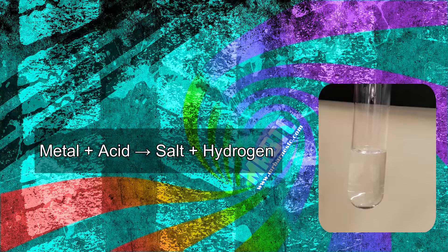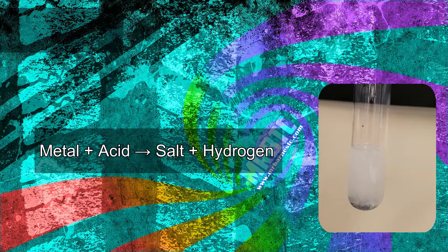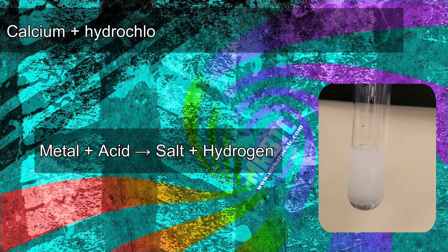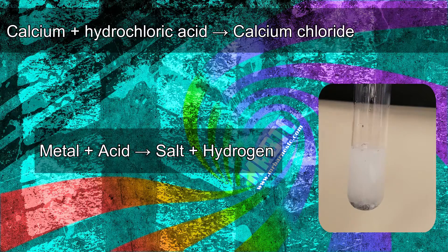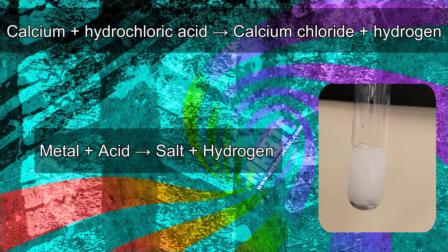As you can see from the reaction going on the right here, I've reacted calcium with hydrochloric acid and it's formed my salt, which is calcium chloride, and hydrogen gas. You know you've got hydrogen because you've got bubbles appearing.